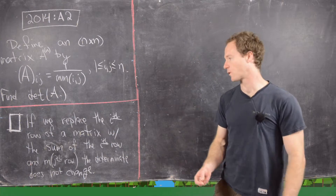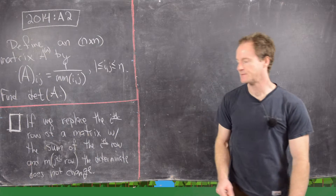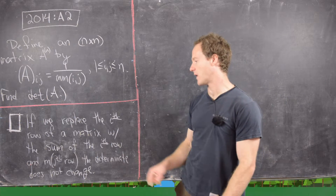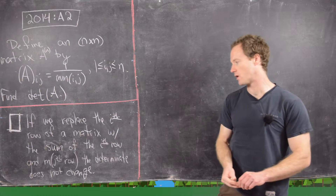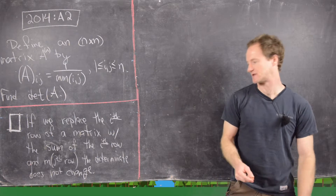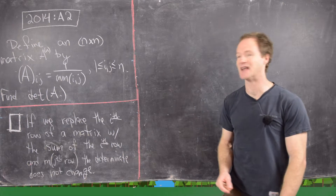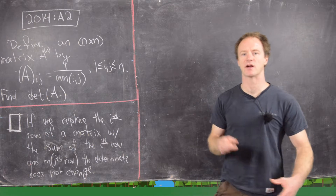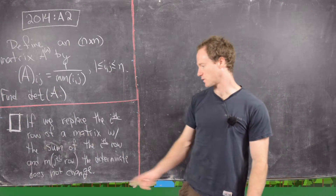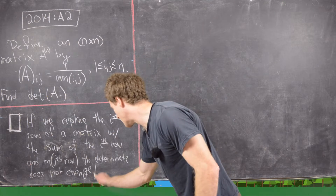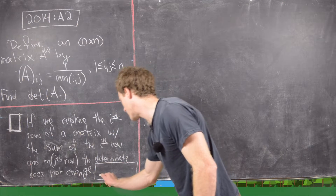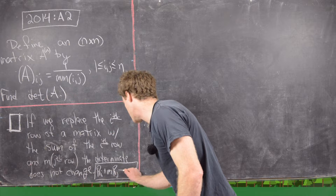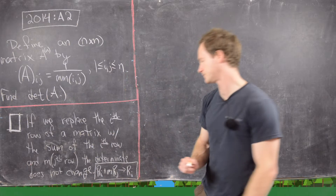We'll do some exploration before we use this fact. The fact goes like this: if we replace the i-th row of a matrix with the sum of the i-th row and m times the j-th row, where i and j are not the same, then the determinant does not change. This is a row operation: row i plus m times row j becomes our new row i.